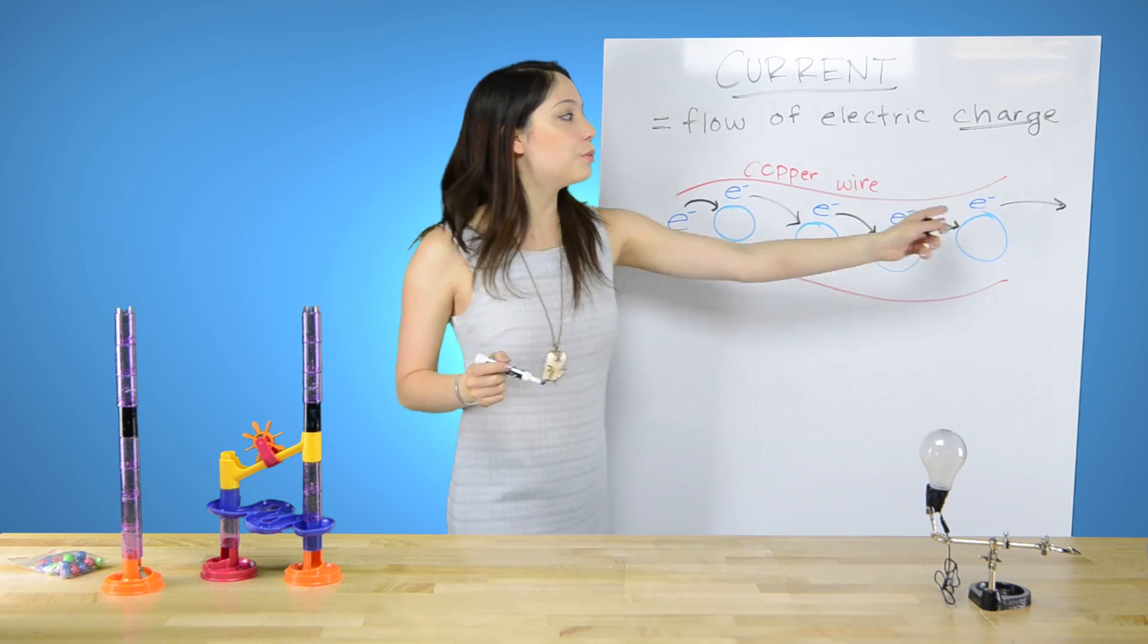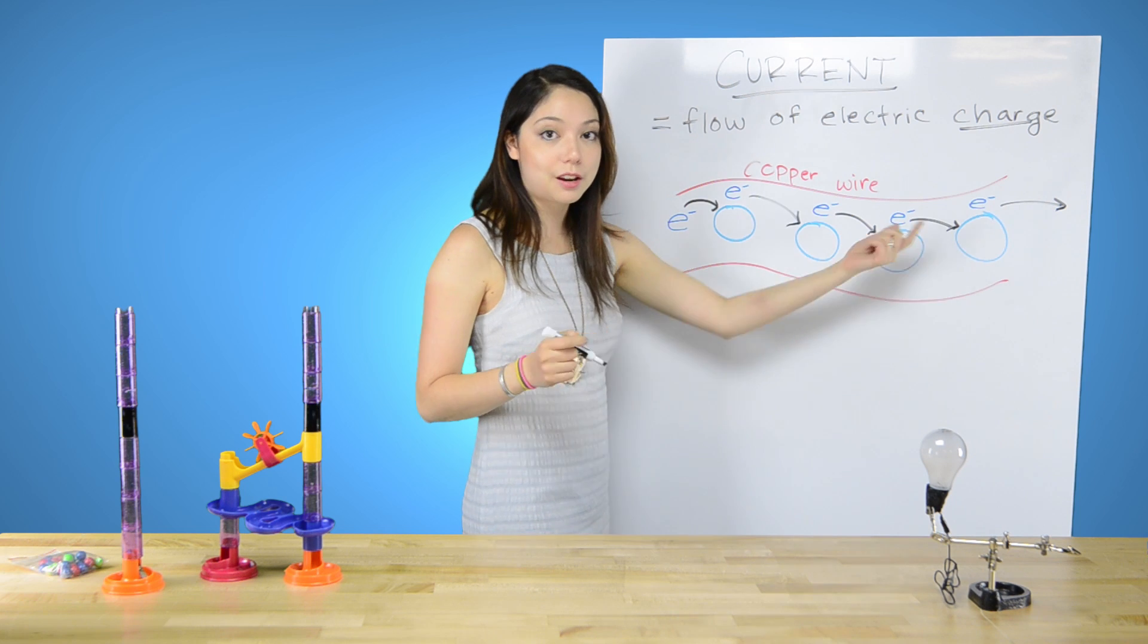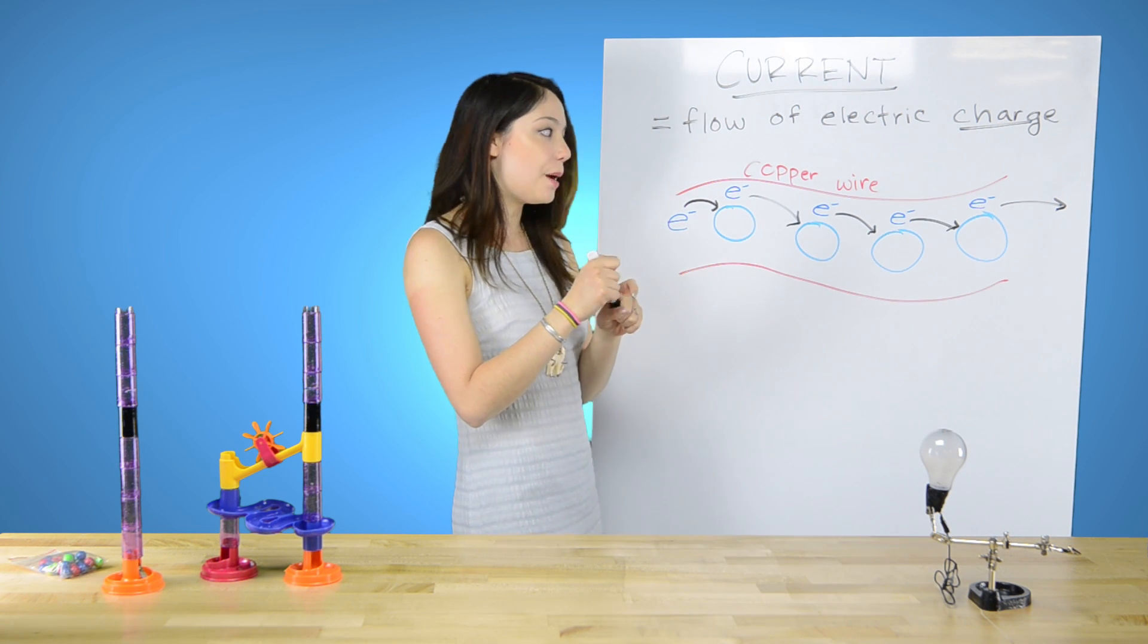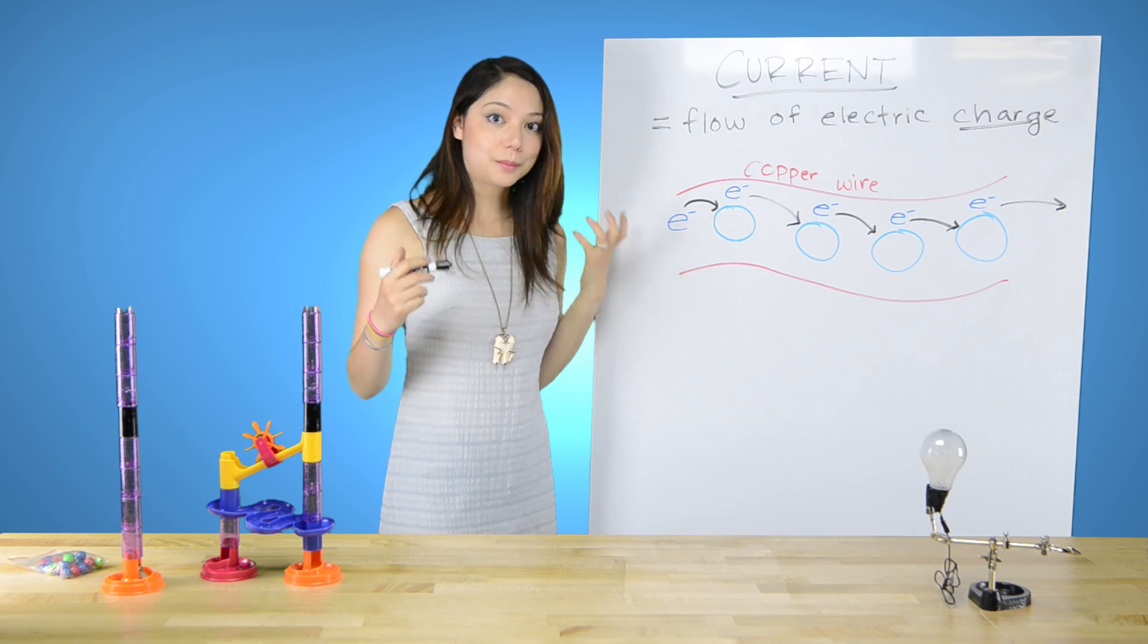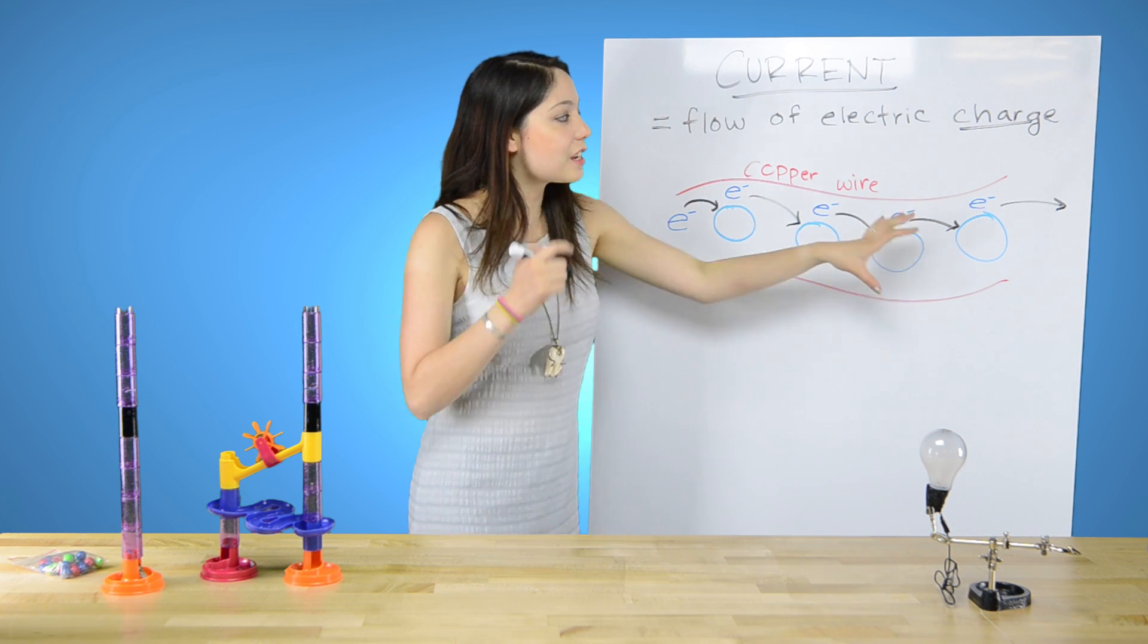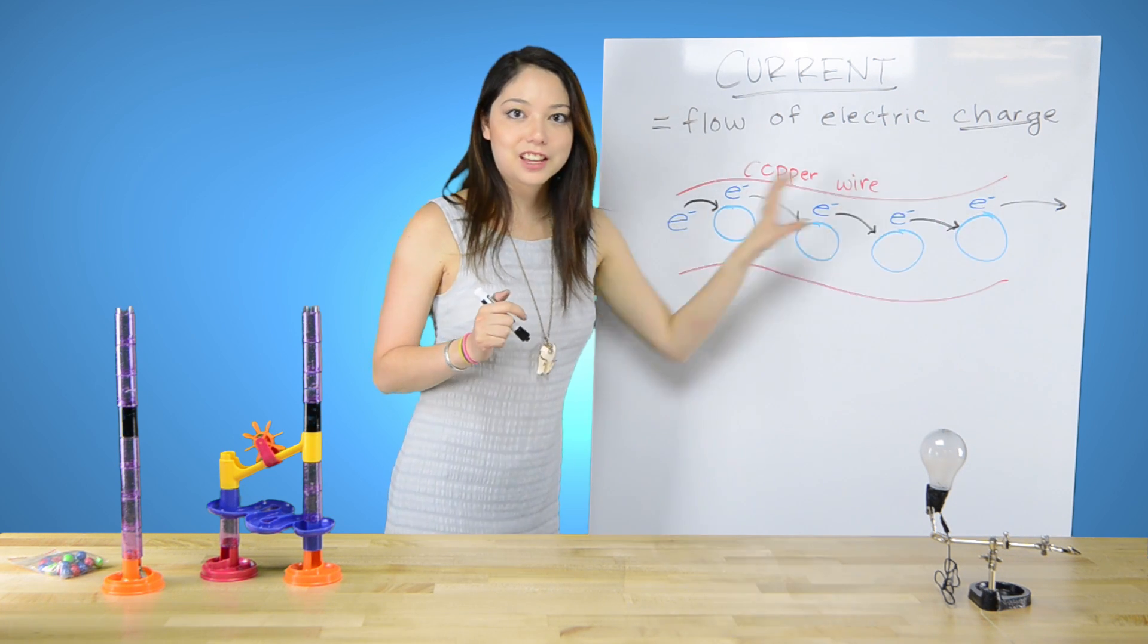This electron, let's say this was on a battery, would go to the negative end of the battery and deplete the battery life a little bit. So this is the flow of electrons that you're seeing here.